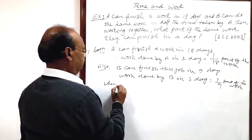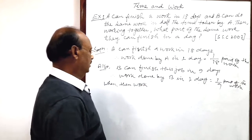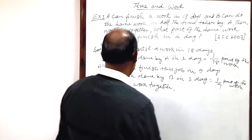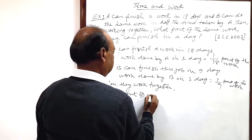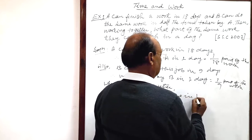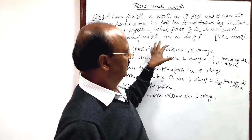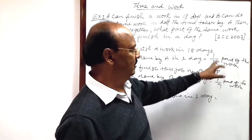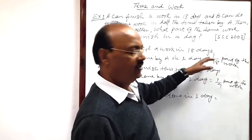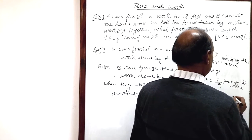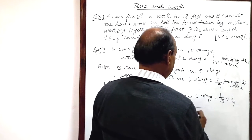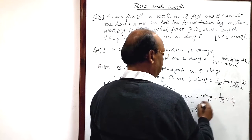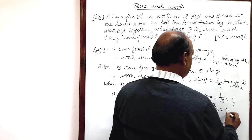So when they, they means A and B, when they work together, the amount of work done in one day, how much? When they work individually, separately, amount of work done by each of them is given here. So when they work together, we have to add their work, 1 by 18 plus 1 by 9. This is equal to 1 by 18 plus 1 by 9. Let us simplify it. LCM will be 18, 1 into 1 is 1 plus 2 into 1 is 2. This is equal to 3 by 18 and this is equal to 1 by 6.